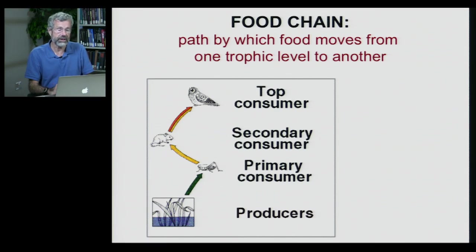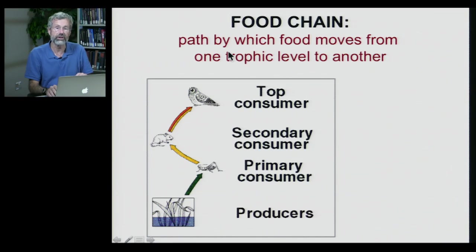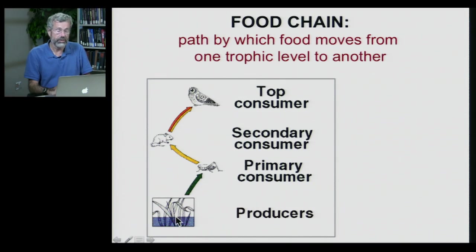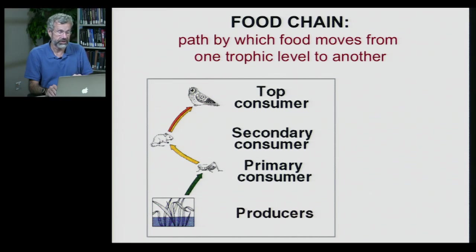The simplest kind of trophic links we could have would be what's called a food chain — the path by which food moves from one trophic level to the other. At the bottom, the foundation of this food chain are the plants. They're the primary producers; they convert sunshine into carbohydrates through photosynthesis. Their plant material is then eaten by primary consumers, or the herbivores, like this grasshopper.